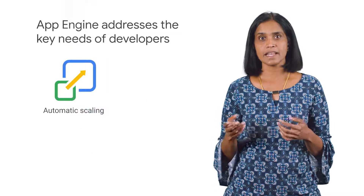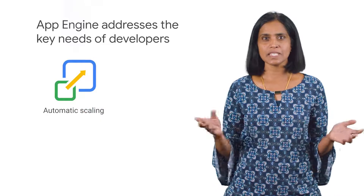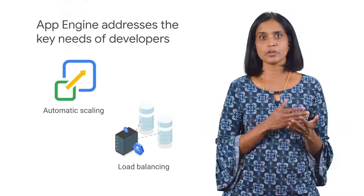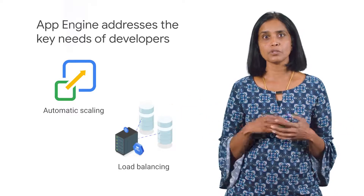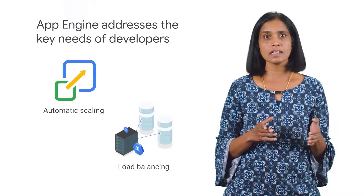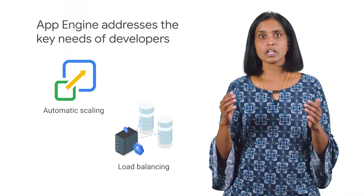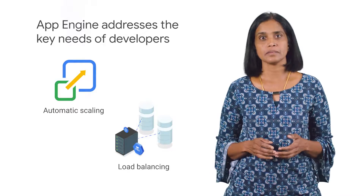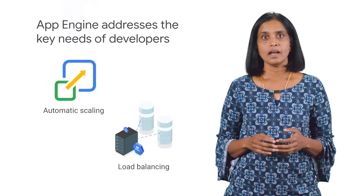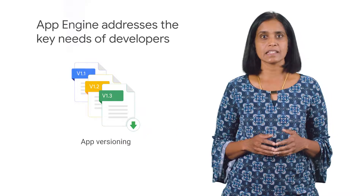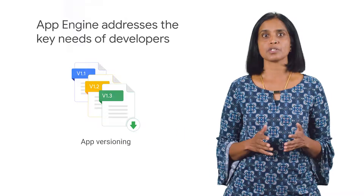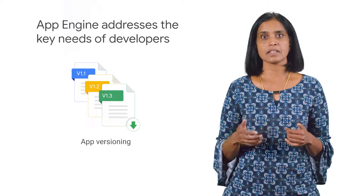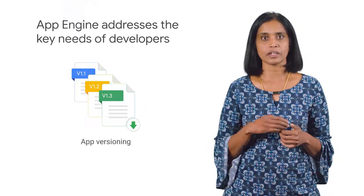The automatic scaling of App Engine allows you to meet any demand, and load balancing distributes load-balanced compute resources in single or multiple regions close to users to meet high availability requirements. App Engine also allows you to easily host different versions of your app, including creating development, test, staging, and production environments.